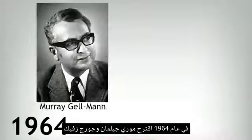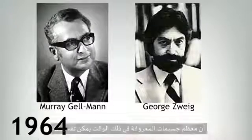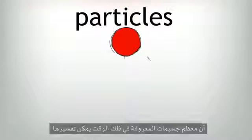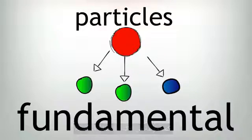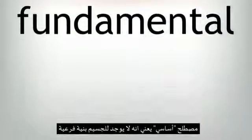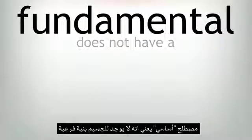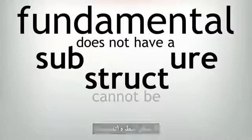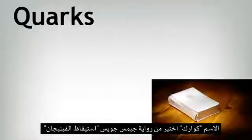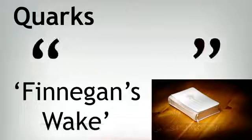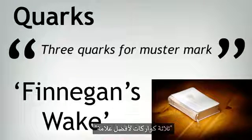In 1964, Murray Gell-Mann and George Zweig suggested that most of the known particles of the time could be explained as being combinations of three fundamental particles. The term fundamental means that the particle does not have a substructure — it cannot be split. The name quarks was chosen from the James Joyce novel Finnegan's Wake: "three quarks for Muster Mark."